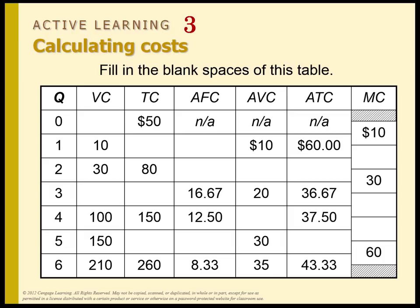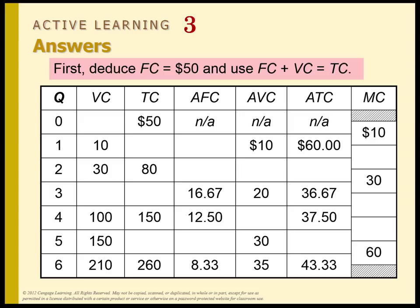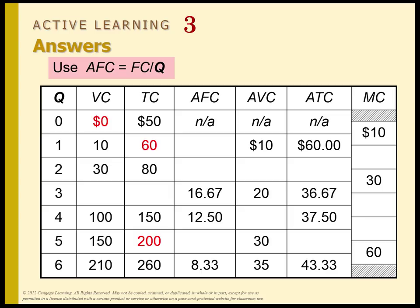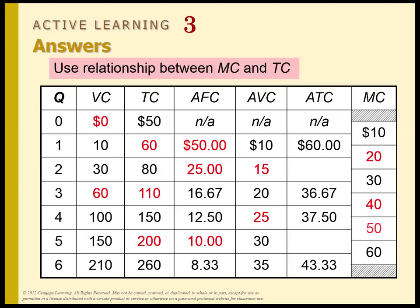You have to realize the fixed cost is 50 because at quantity equals zero, there's still a total cost of 50. So fixed cost is 50, and then you can use the fact that fixed cost plus variable cost equals total cost. Then use the average fixed cost formula and the average variable cost formula to fill out those columns, and the rest is straightforward — and those are the answers.